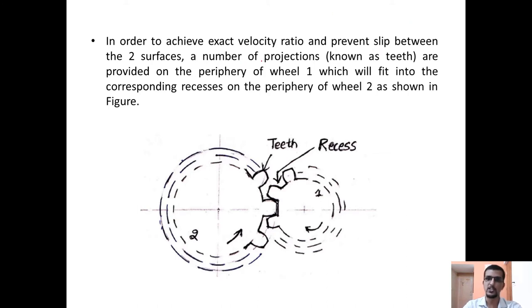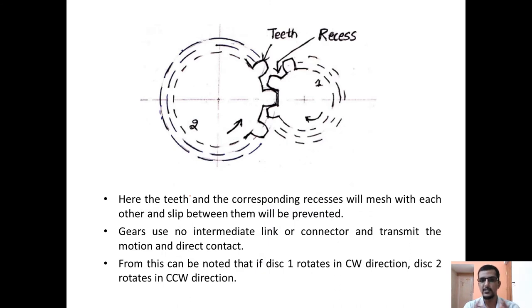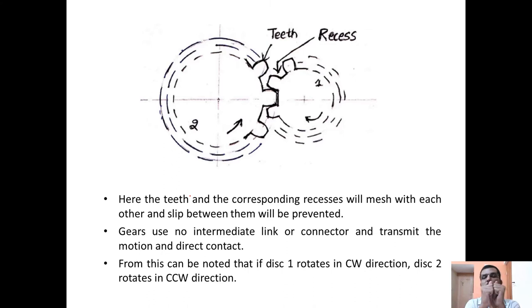In order to achieve the exact velocity ratio and prevent slip and power loss, a number of projections are provided. Consider wheel one and wheel two — the gap between two teeth is called the recess, and teeth from one gear will mesh into the recess of another gear. When gear one begins to run in the clockwise direction, correspondingly gear two begins to rotate in the anti-clockwise direction. Gears are used to transmit power over very short distances, unlike belt drive, chain drive, or rope drive where the driver and driven pulleys are not in direct contact.